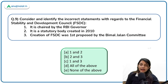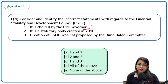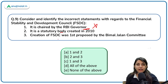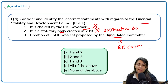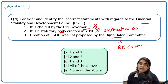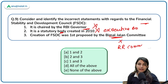On Financial Stability Development Council: FSDC is chaired by RBI Governor — No, the subcommittee is chaired by the RBI Governor; FSDC itself is chaired by the Minister of Finance. It is a statutory body created in 2010 — No, it is an executive body, not a statutory body. Creation of FSDC was first proposed by the Bimal Jalan Committee — No, it was the Raghuram Rajan Committee. FSDC is very important for your exams. All three statements here are incorrect.